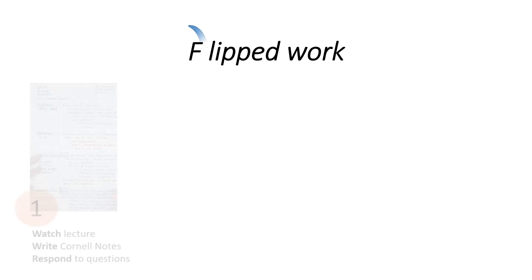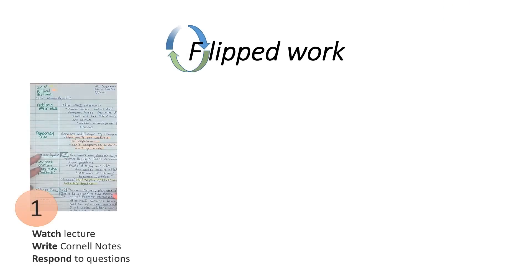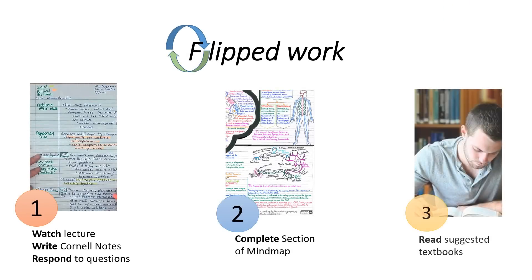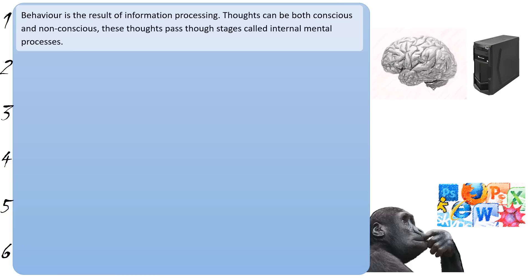I'm going to go through some of the key ideas of cognitive psychology, and then go into each of them in a little bit more depth afterwards. A key principle for cognitive psychologists is the idea that behaviour is a result of information processing. Thoughts can be both conscious and non-conscious, and these thoughts will pass through certain stages — these stages are what's called internal mental processes.